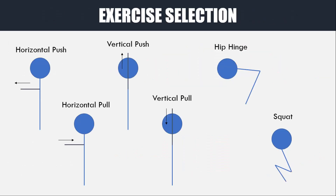Another important consideration for hypertrophy training is what exercises to select. There are no best exercises, but once again there are principles to help us make better exercise choices. First and foremost, we want to select exercises that cover every movement for maximum muscle stimulation. The primary movements are vertical pushing, horizontal pushing, vertical pulling, horizontal pulling, squatting or lunging, and a hip hinge. Performing all of these movements will use essentially all of the muscle groups in your body, and accessory exercises can then be employed for additional emphases on certain muscles.